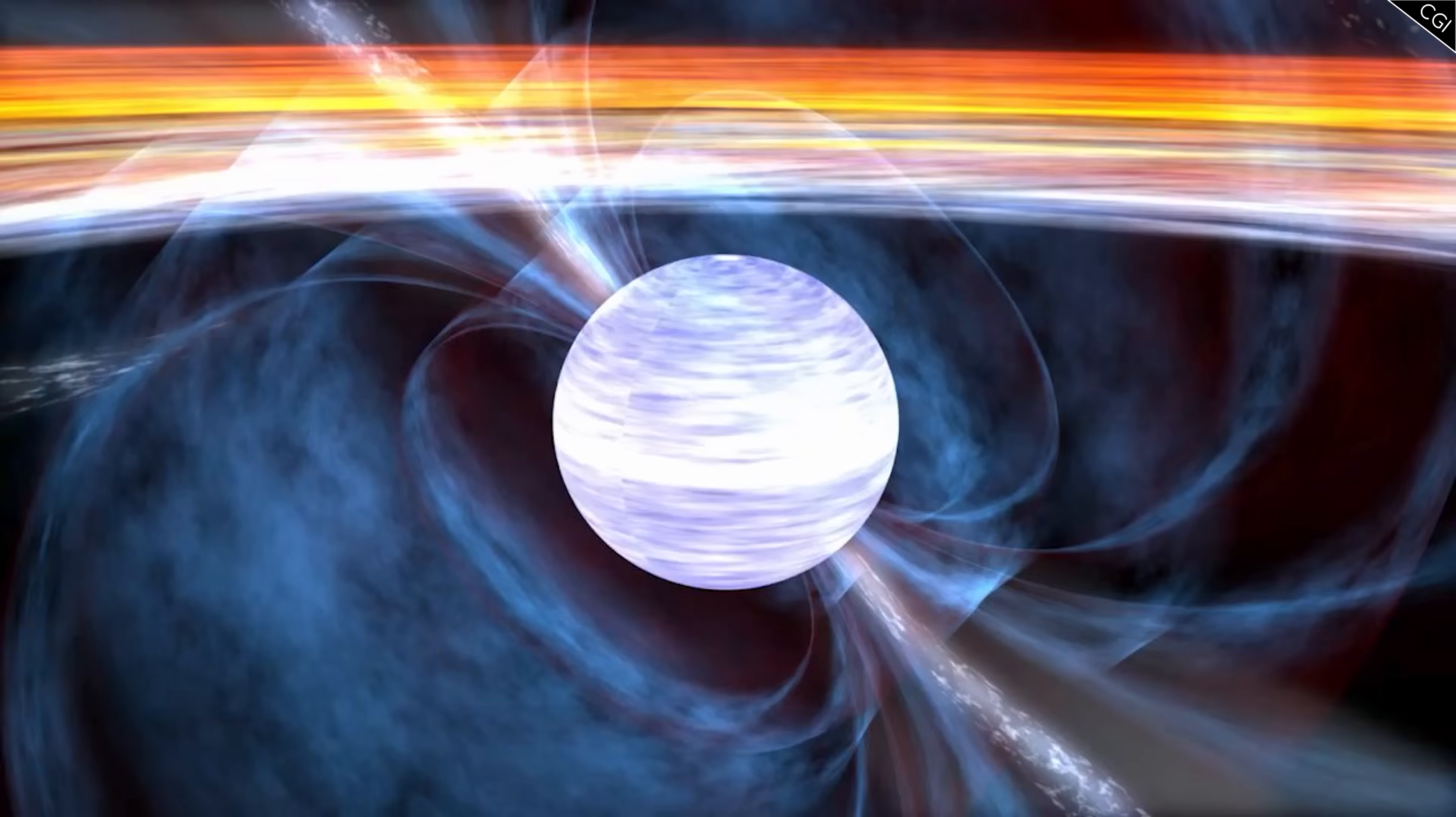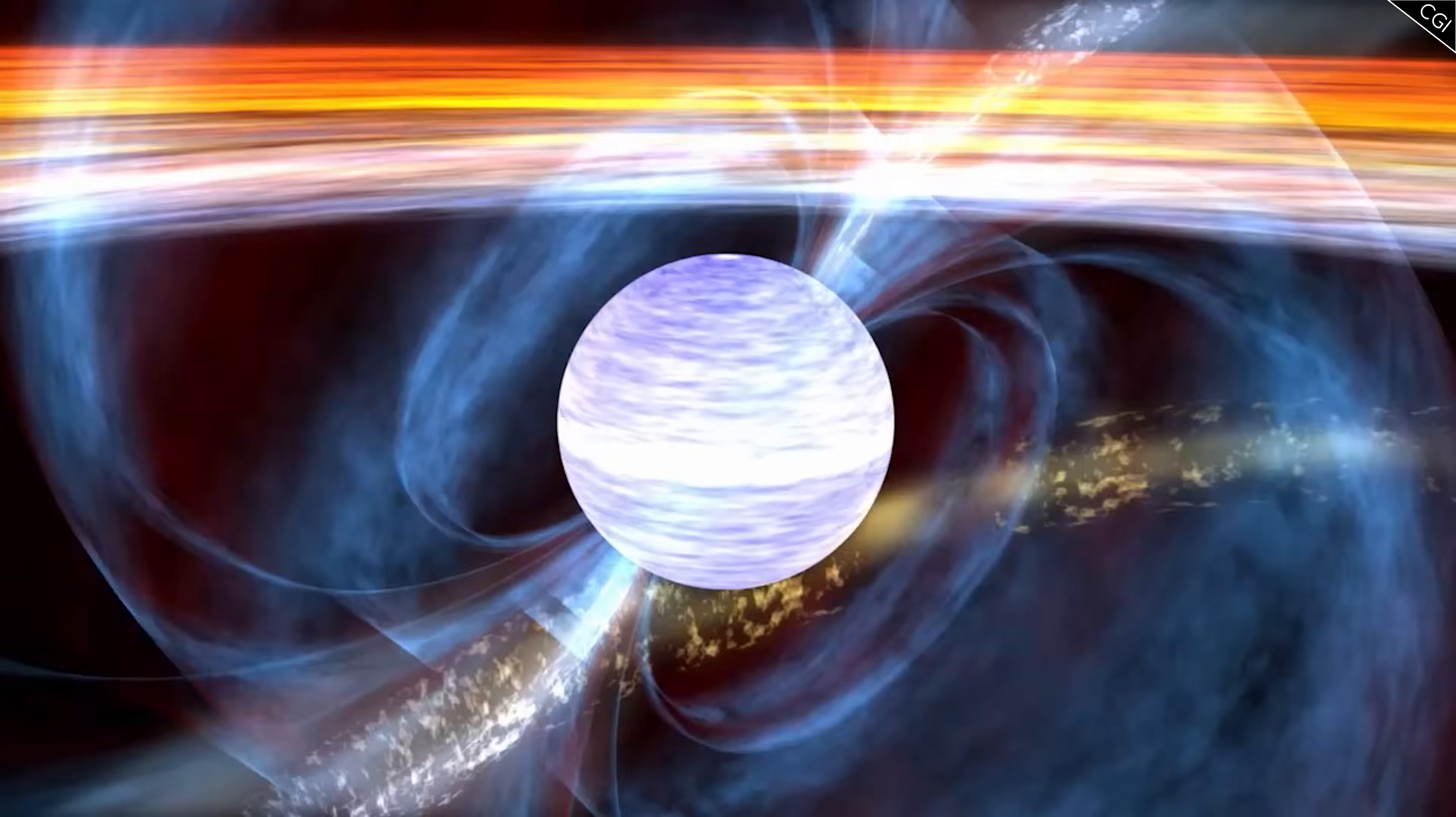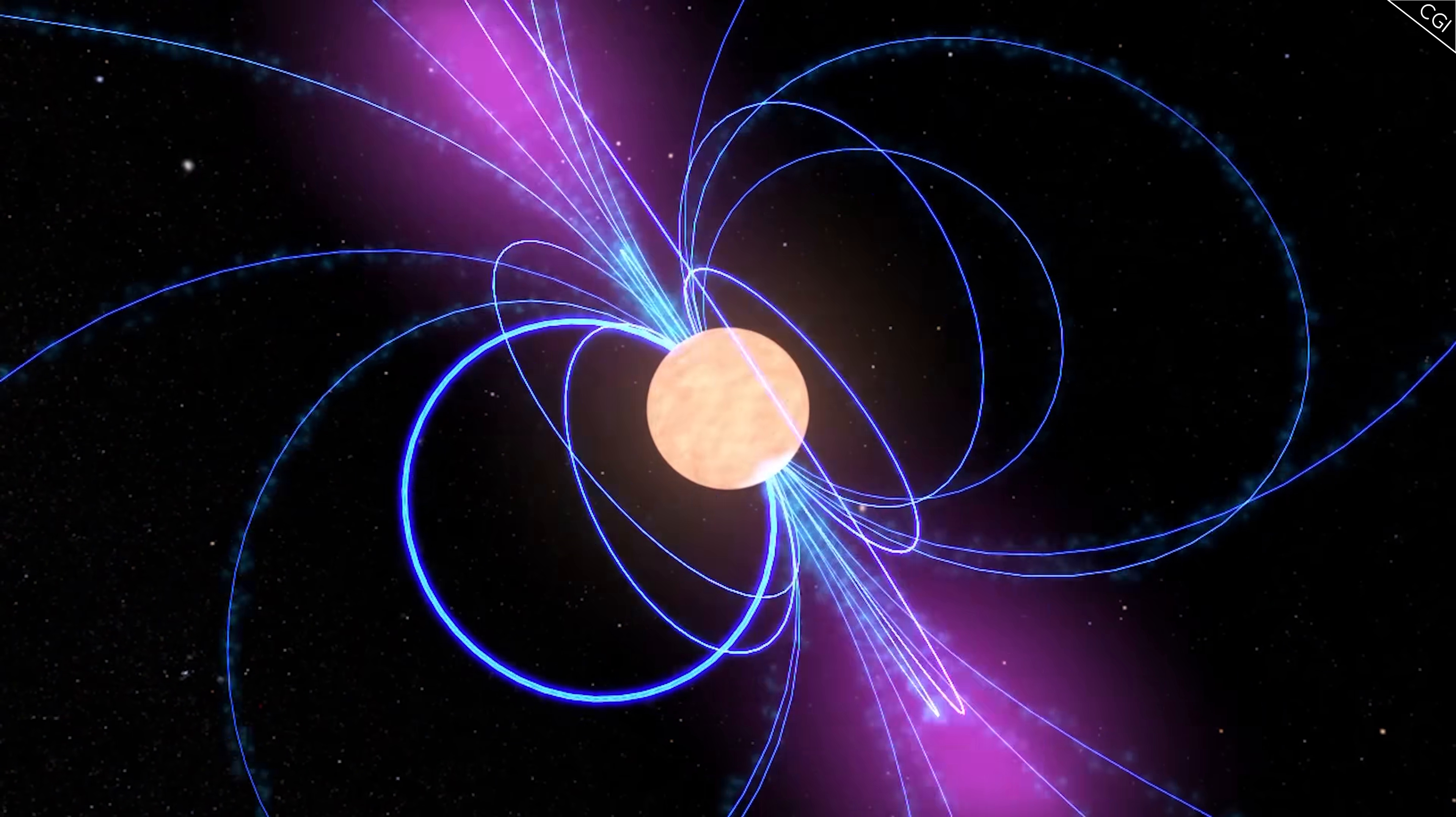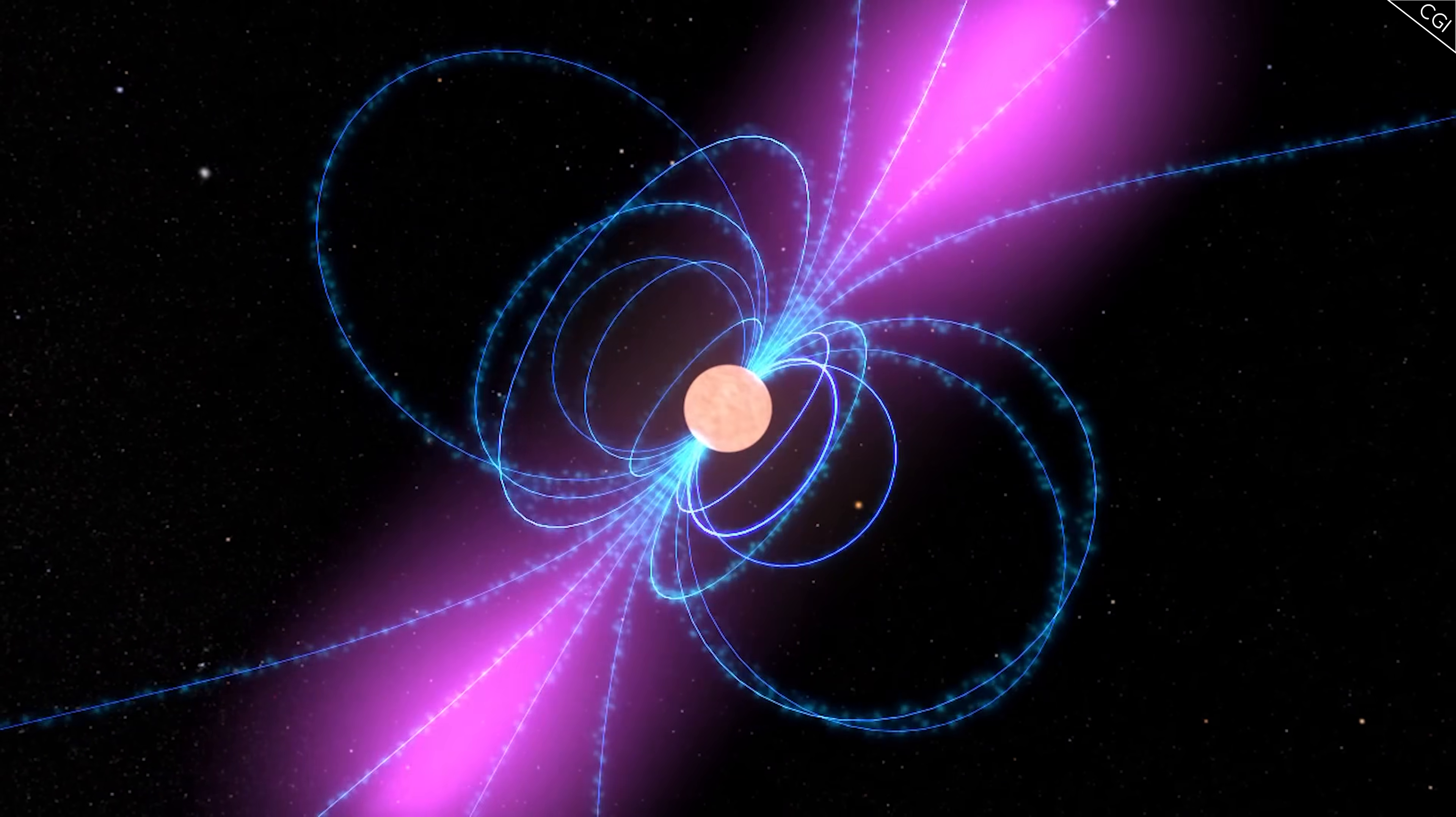You see, as pulsars lose energy by shining their powerful beams into the cosmos, conservation of energy will ensure that the pulsar slows down. Eventually, the pulsar will slow down so much that it can no longer power the pair production cascades, and the light emission starts to shut off. The pulsar has entered the so-called Death Valley.